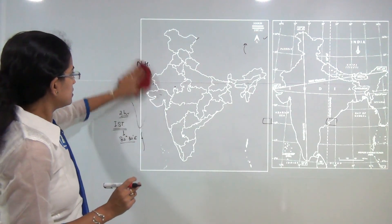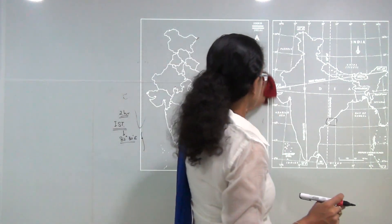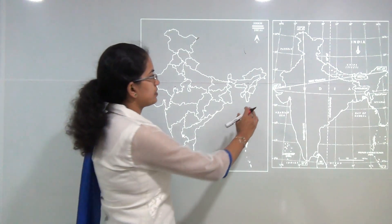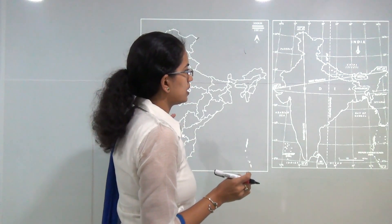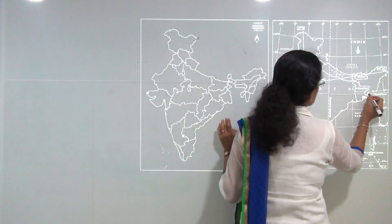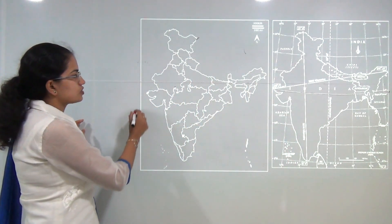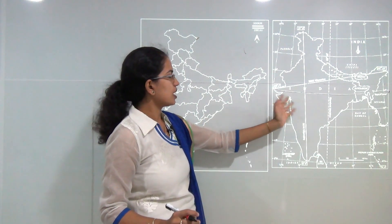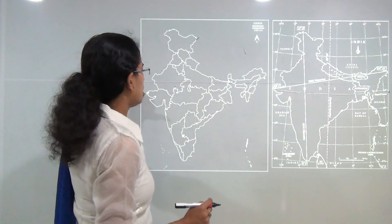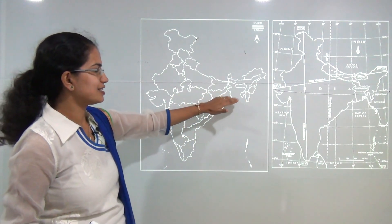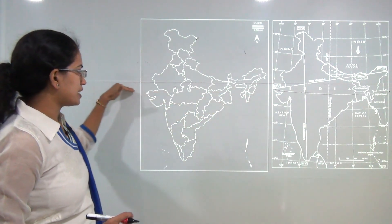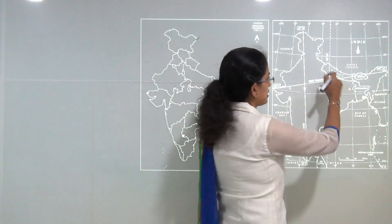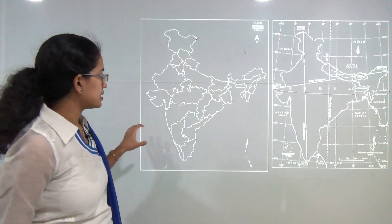Looking at the maps, the first map explains the latitudinal and longitudinal extensions already covered in Class 7 Geography. The key line visible on the map is the Tropic of Cancer, which crosses Gujarat, then Madhya Pradesh, parts of Odisha, West Bengal, and Tripura. The Tropic of Cancer runs at 23.5 degrees north in the northern hemisphere and nearly divides India into two halves — upper and lower.